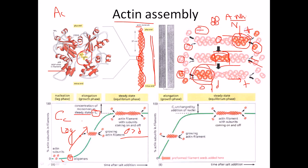The critical concentration is very important. If the concentration of free actin is lower than the critical concentration, then the actin will polymerize further. If it is higher than the critical concentration, then the actin filament will get dissociated and free actin proteins are released into the environment. That is the basic concept.